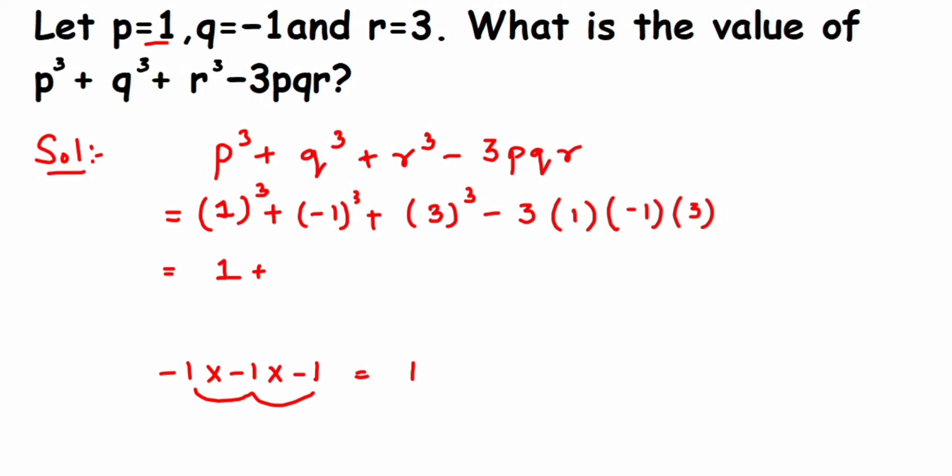You can check: minus times minus is plus, plus times minus is minus. So we get minus 1. So minus 1³ is minus 1. So 1 plus minus 1 plus 3³, that is 3 × 3 × 3. So 3 × 3 is 9, 9 × 3 is 27, so we'll get 27.